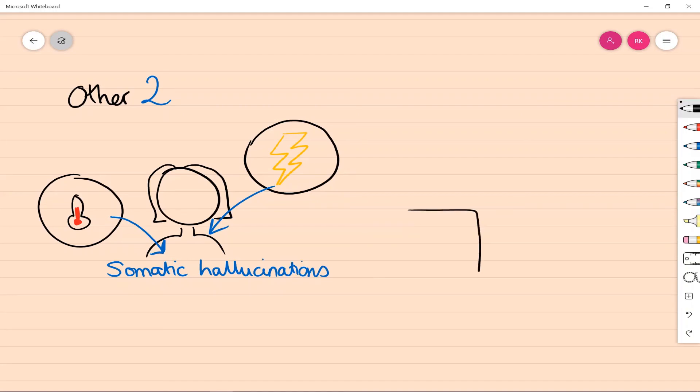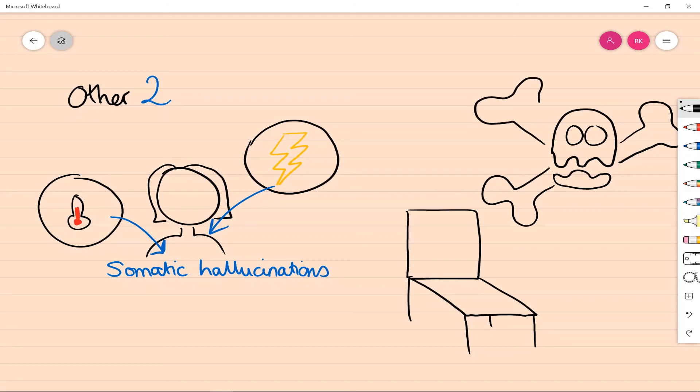Delusional perception, on the other hand, is a highly interesting experience in which a normal stimulus is interpreted in a delusional way. The person may feel that the red chair means that someone that they know might die, for example. There is no plausible link between those two ideas and it can really be anything.